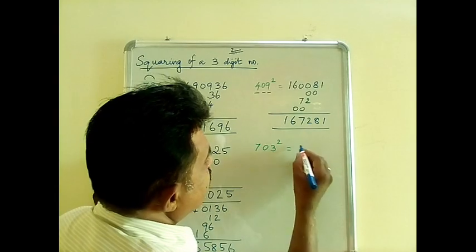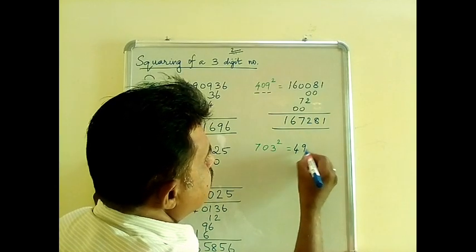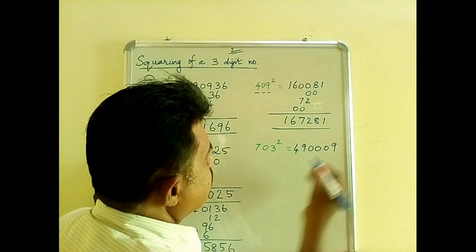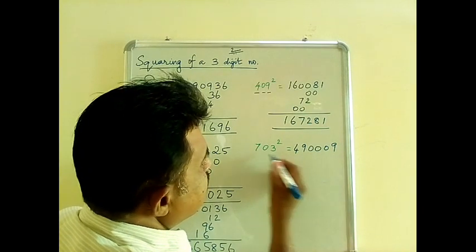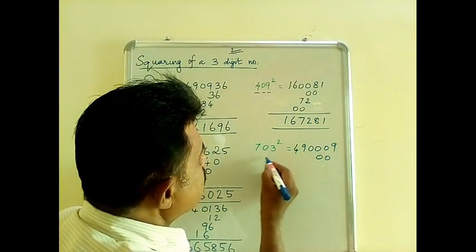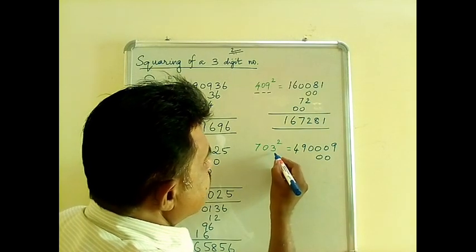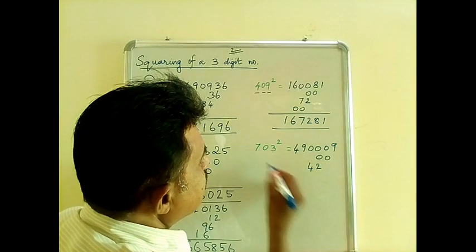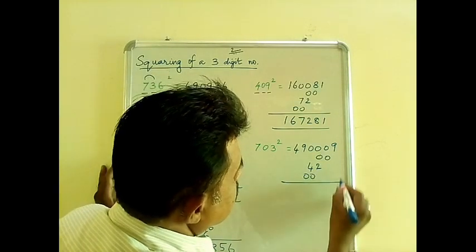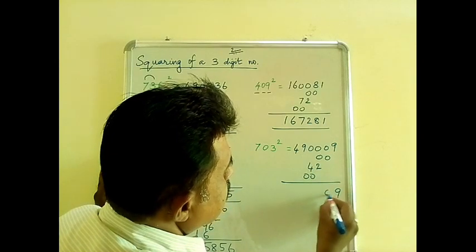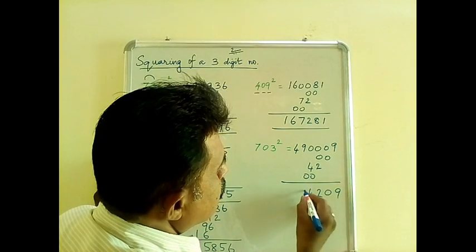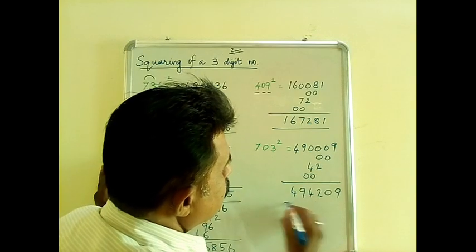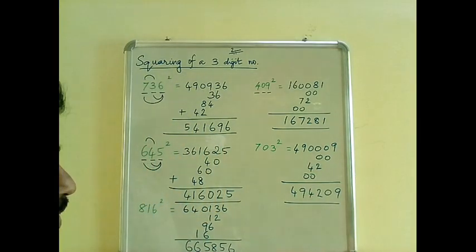This is nothing but 49, 0, 0, 9. Now 2bc is 0, 2ac is nothing but 42, and 2ab is again 0. Now add: 9, 0, 2, 4, 9, 4. So the square of 703 is nothing but 494,209.